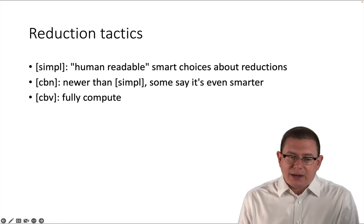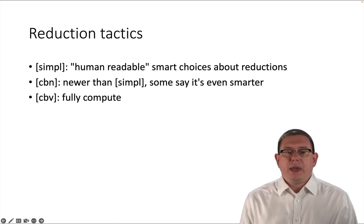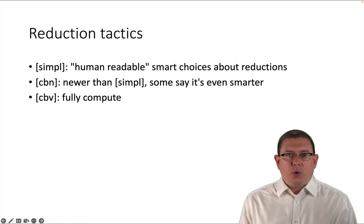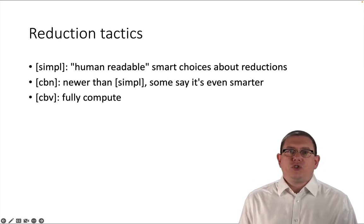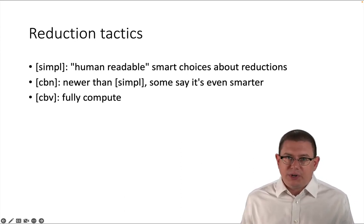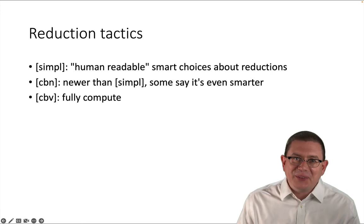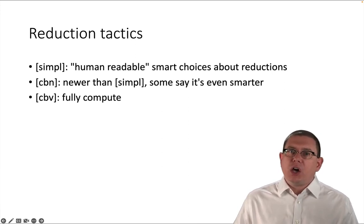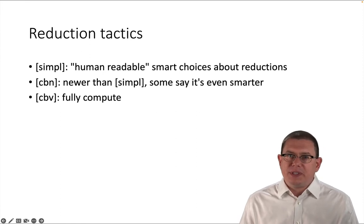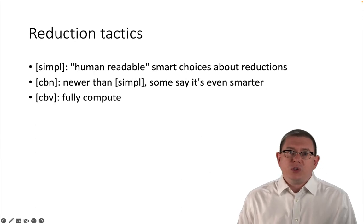Okay, so with that established as a concept as well, here's what these tactics are doing. Simple, the tactic that we've used so far in basics, is trying to make smart human readable choices about reductions. It's trying to reduce the application of a function to its arguments in a way that leaves the entire expression when it's done something that it thinks is going to be easily or at least mildly well read by a human. So simple is trying to do something that's optimized for you and me, which is why it's maybe a little hard to explain exactly what it does.